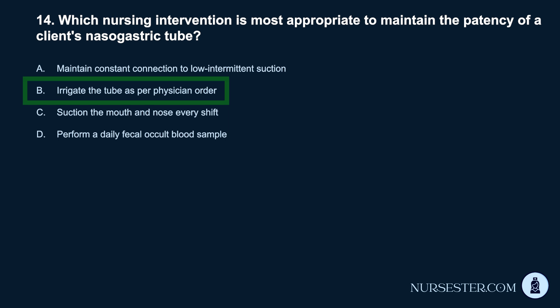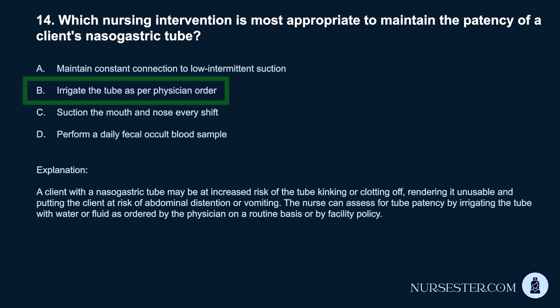Correct answer: B. Irrigate the tube as per physician order. A client with a nasogastric tube may be at increased risk of the tube kinking or clotting off, rendering it unusable and putting the client at risk of abdominal distension or vomiting. The nurse can assess for tube patency by irrigating the tube with water or fluid as ordered by the physician on a routine basis or by facility policy.